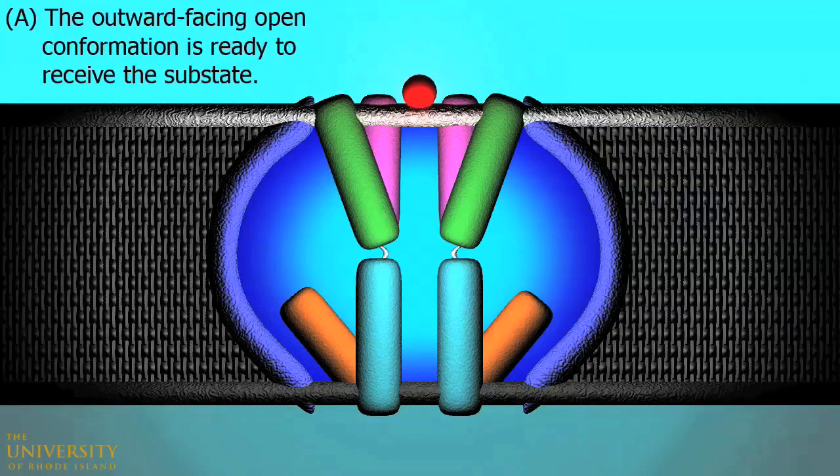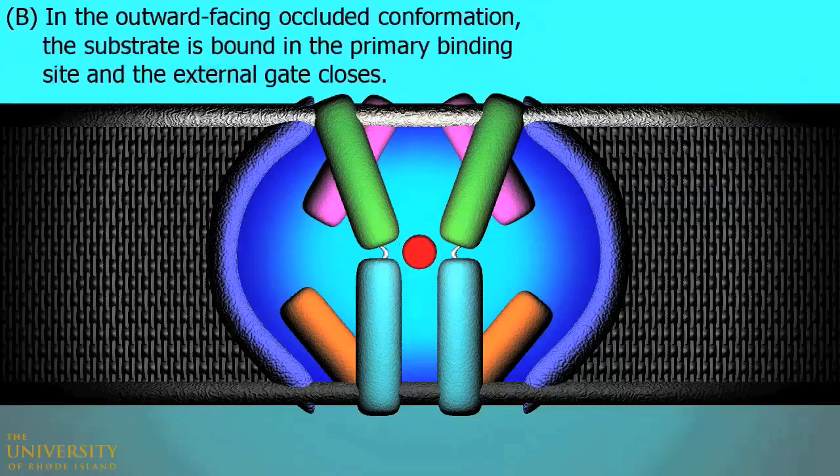In stage A, the outward-facing open conformation is ready to receive the substrate. In stage B, or the outward-facing occluded conformation, the substrate is bound to the primary binding site and the external gate closes.